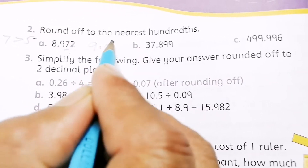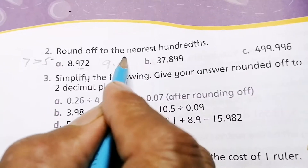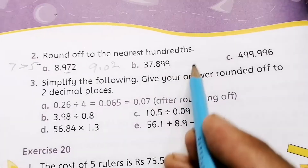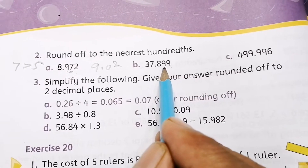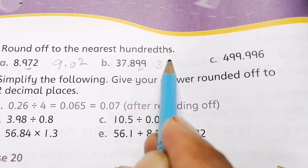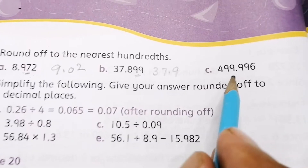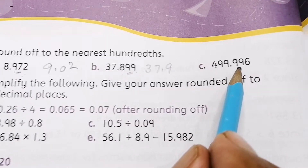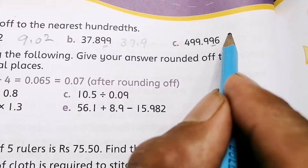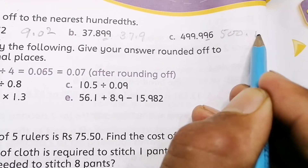For 37.899, the hundredth place digit is 9. Since 9 is greater than 5, the 9 rounds up to 10, so 1 is carried over and 8 becomes 9, giving 37.90. For 499.996, the hundredth place digit is 9 — it rounds up and you carry over, resulting in 500.00.